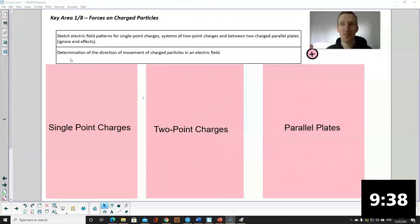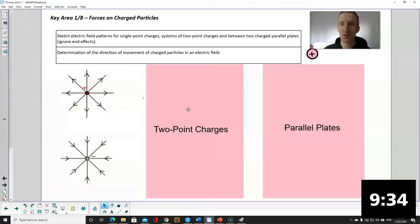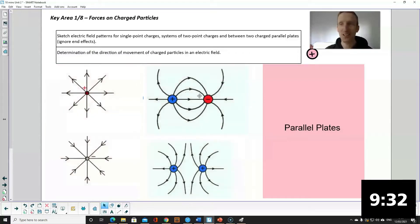You have to be able to draw electric fields. You have three scenarios. Single point charges look like the spokes on a wheel. Two point charges will look like the magnetic field around a bar magnet.